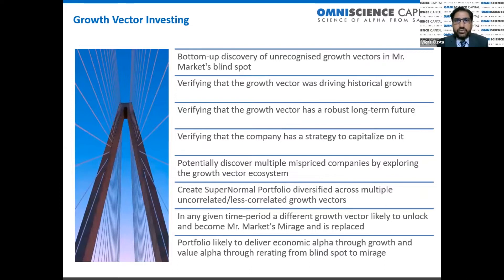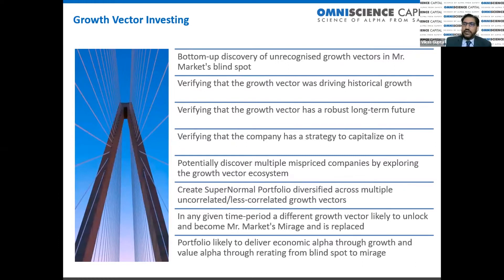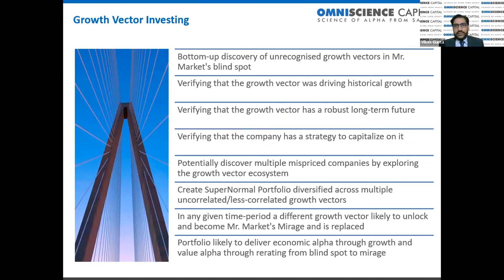Once we go through the capital multiplier companies, we discover several unrecognized growth vectors bottom-up. The first job involves three verification steps: first, verifying that the growth vector was driving historical growth for the companies; second, that the growth vector has a long-term future with large TAM and a reasonably large growth rate; and third, that the company has a good strategy to capitalize on it.